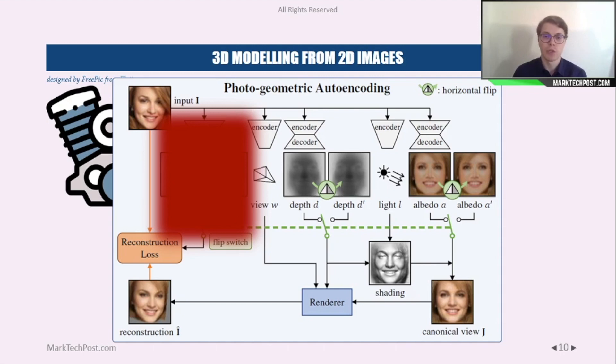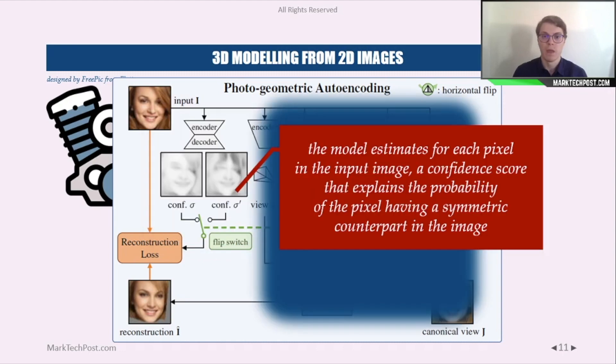The shaded region here of the model architecture is another component of the model. In particular, this component aims to estimate for each pixel of the image a confidence score that explains the probability of the pixel having a symmetric counterpart in the image.